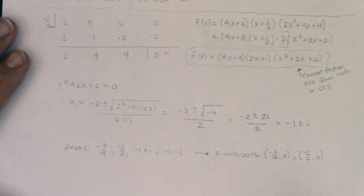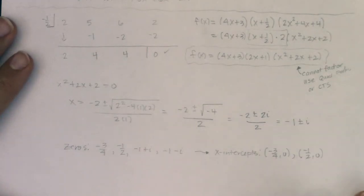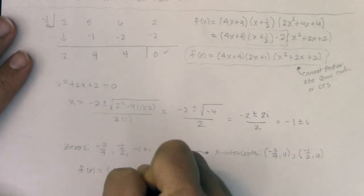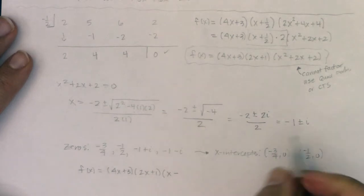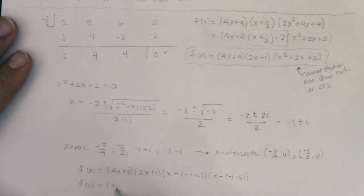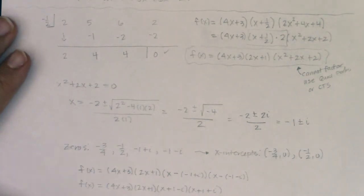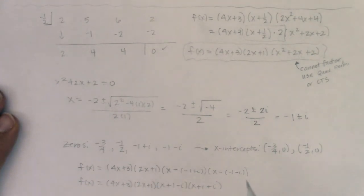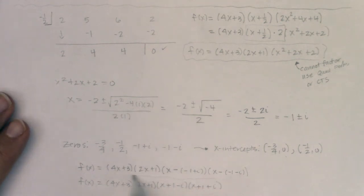We can't cross the x-axis if we're talking about complex numbers in the real world. And last but not least, if you wanted to factor this a little further — over the complex numbers — you could say f of x equals (4x + 3)(2x + 1)(x − (−1 + i))(x − (−1 − i)), which simplifies to (4x + 3)(2x + 1)(x + 1 − i)(x + 1 + i). So that is a pretty intense problem. You've got your four zeros, two of them are x-intercepts, and if you wanted to break this function down into two real factors and two complex factors, you could.